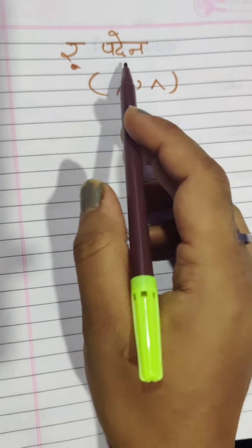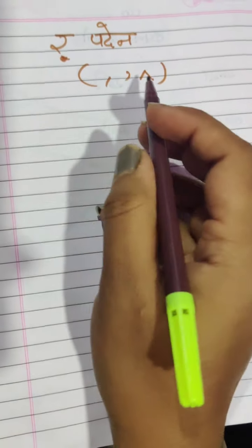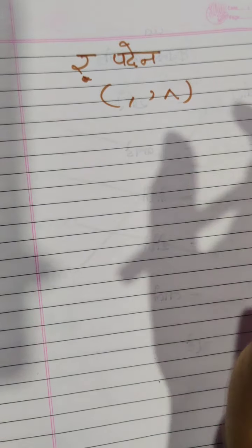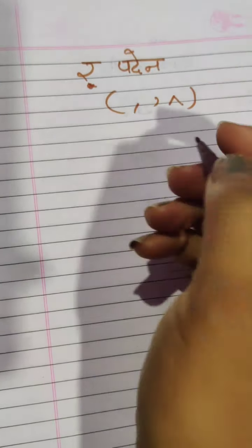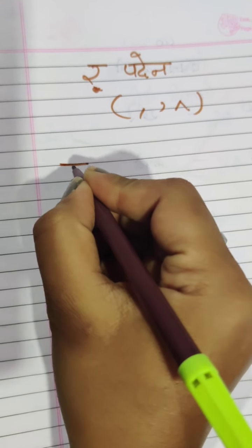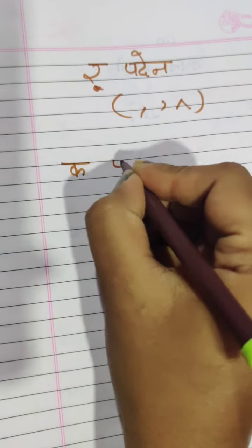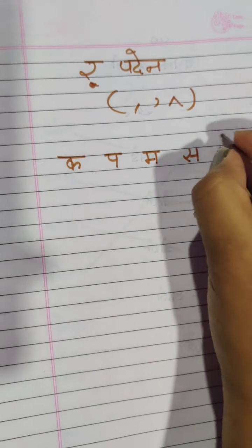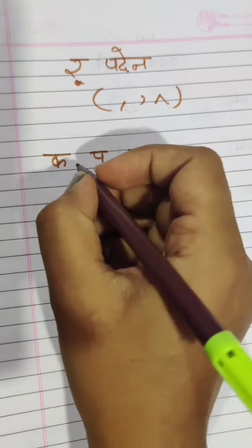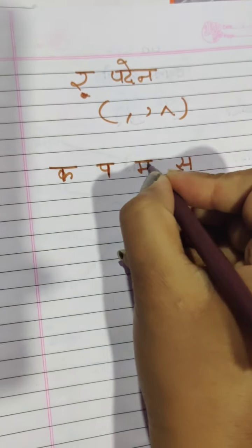Padeen means pair and the R comes below the letter. Let's see how to put Padeen in the letter which is of standing line. Like the standing line letters are K, P, M, S. These are standing line letters.